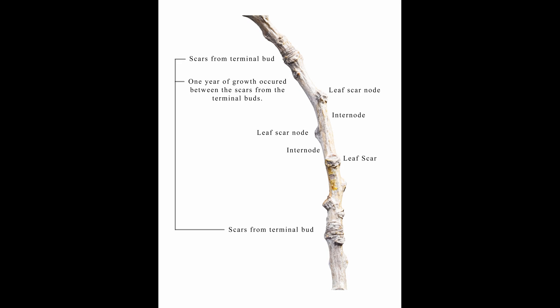Lateral buds are formed at the base of a leaf where the leaf meets the stem. This location is called the node. The space between the nodes is called the internode.